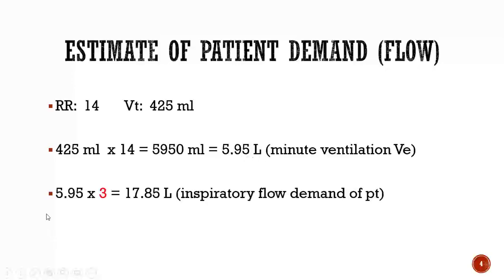You then take the minute ventilation — 5.95 — and multiply it by 3. That gives you 17.85 liters, which is the inspiratory flow demand of that particular patient. This gives you one component of information needed for your O2 device selection: your patient's inspiratory flow needs, which is 17.85 liters per minute.